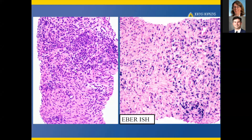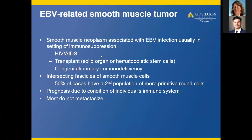Here is a neoplasm on the left with eosinophilic spindle cells and a second population of somewhat more primitive-looking cells. EBER ISH was performed and was positive. This is an EBV-related smooth muscle tumor — mentioned in the fourth edition but now its own category in the fifth edition. It's a smooth muscle neoplasm associated with EBV infection, usually in the setting of immunosuppression such as HIV/AIDS, transplant recipients, or congenital/primary immunodeficiency. Morphologically, there are intersecting fascicles of smooth muscle cells; half the cases have a second population of more primitive round cells. Most do not metastasize.